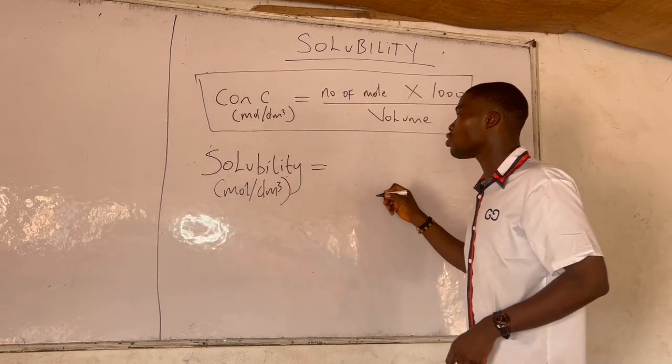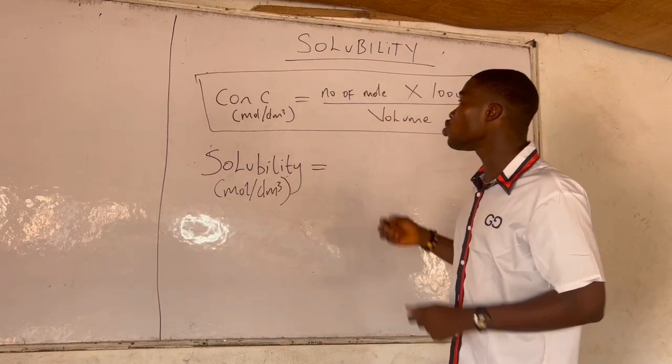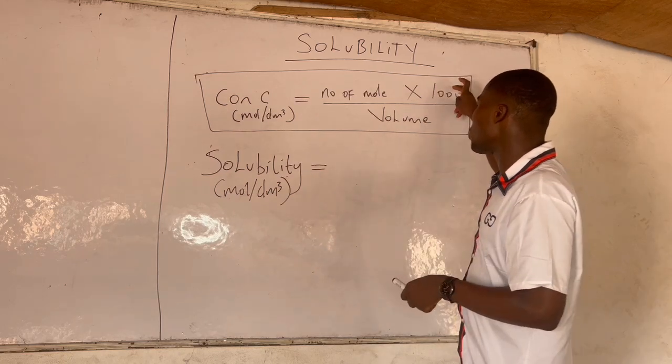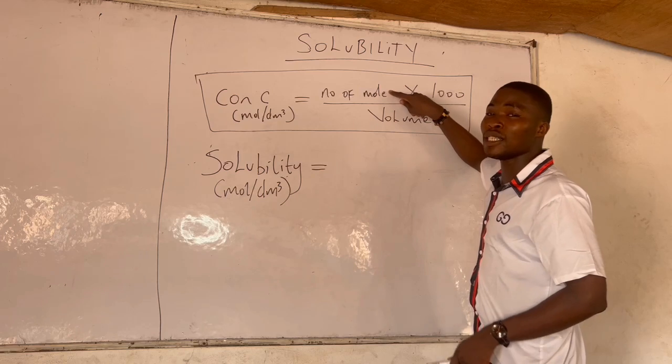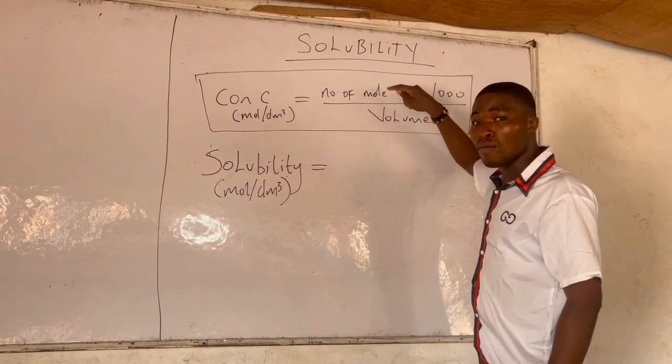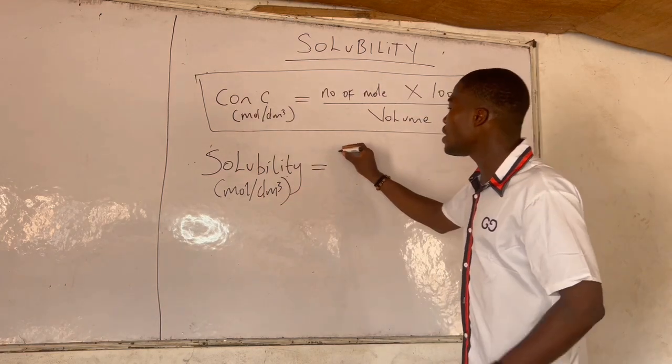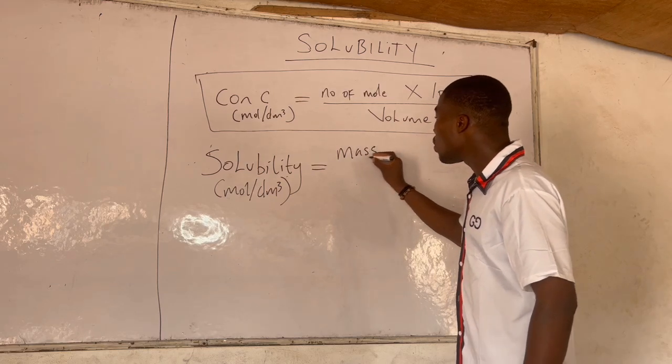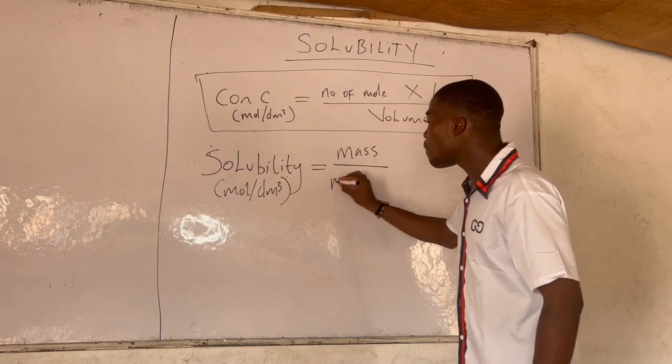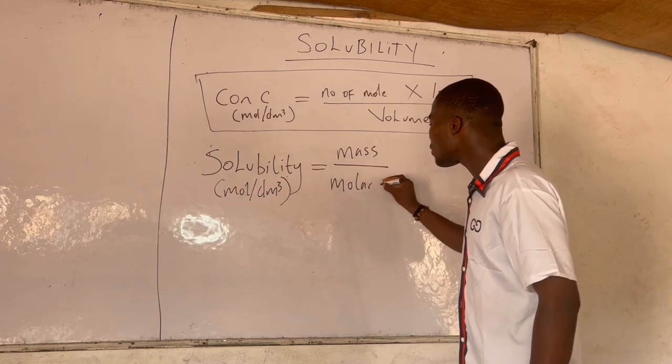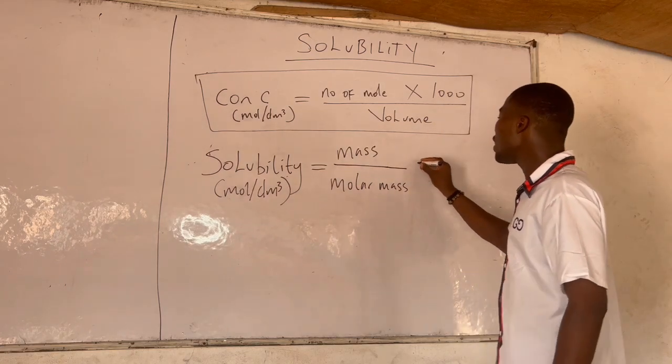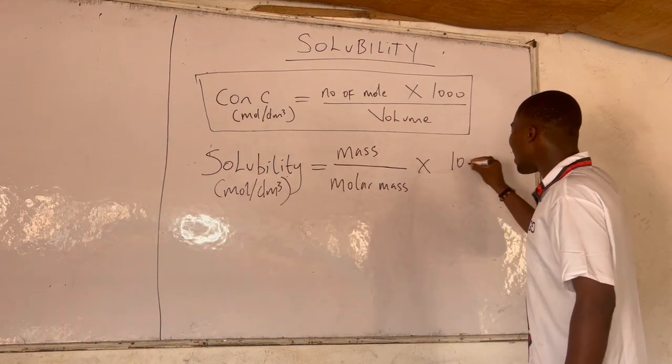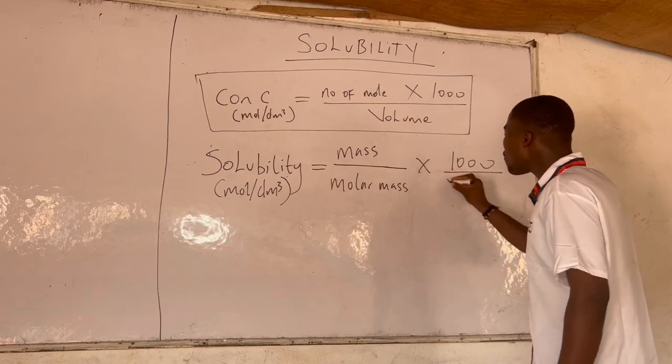Solubility of a solute in mole per dm³ is the number of moles of the solutes times 1000 over volume, where number of moles can be mass over molar mass. So solubility is mass over molar mass, which is already in grams, times 1000 over volume in cm³.